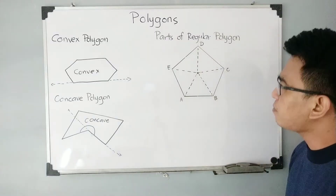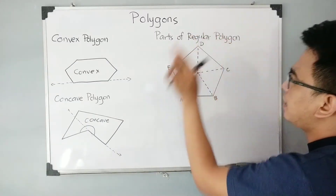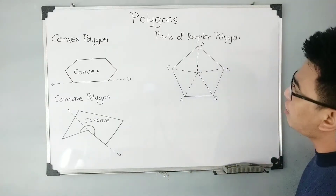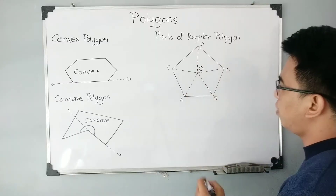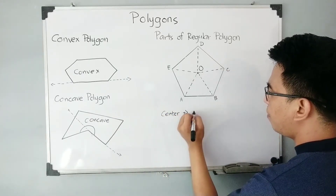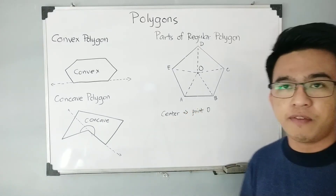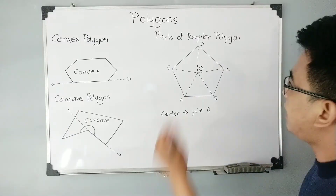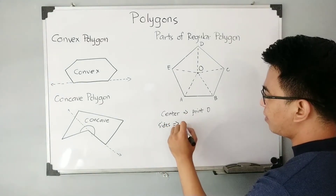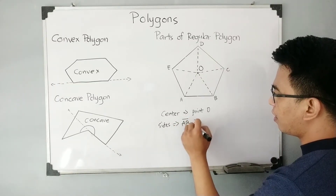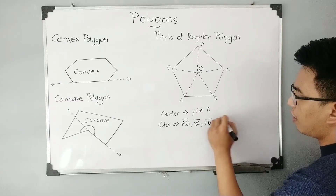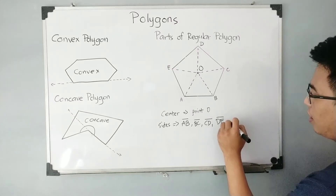So let's move on with the different parts of a polygon. I have here polygon ABCDE, which is an example of a regular pentagon. The first part is your center — the center of the polygon is point O. Next are the sides of the polygon: we have side AB, side BC, side CD, side DE, and lastly side EA or AE. Since this is a five-sided polygon, it has five sides.